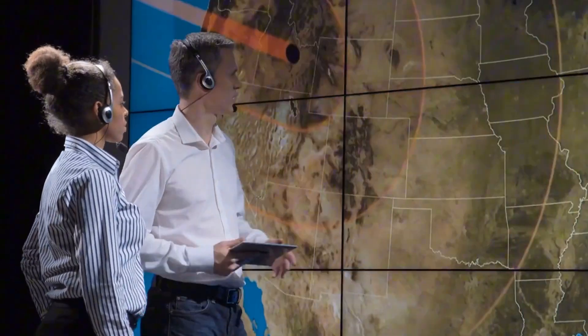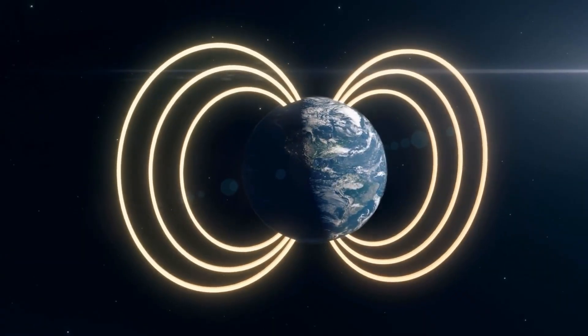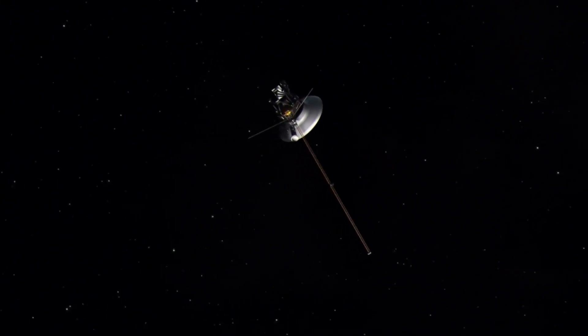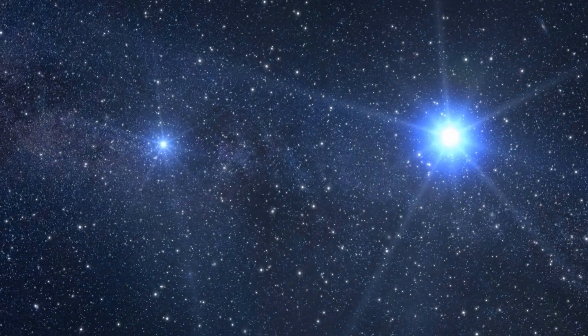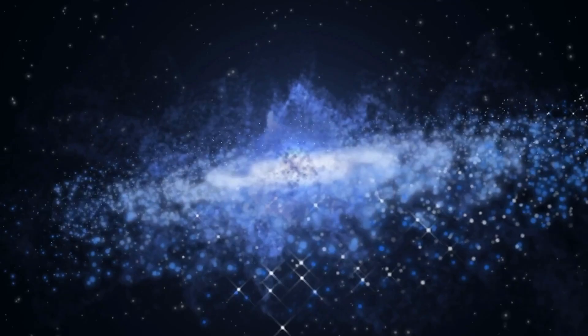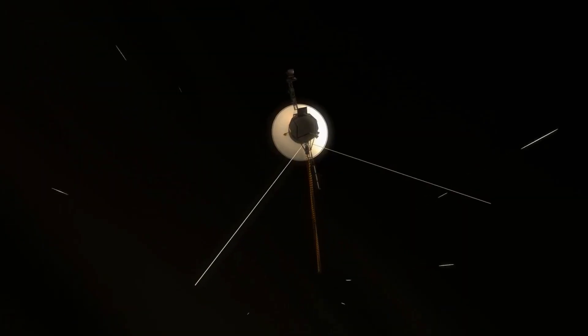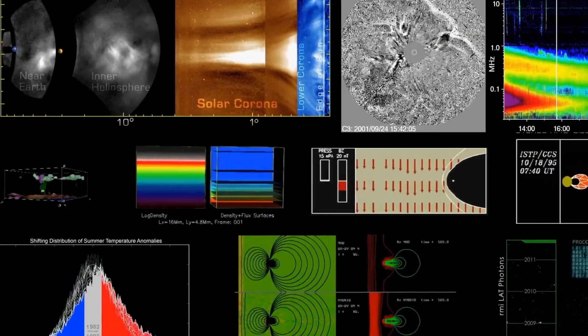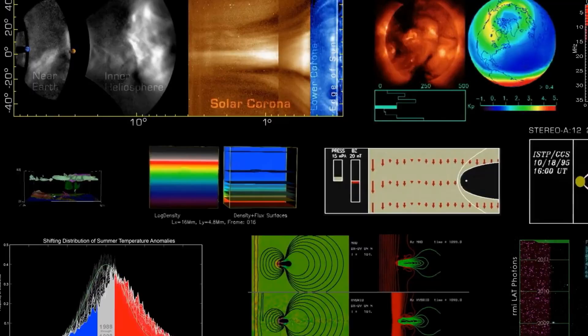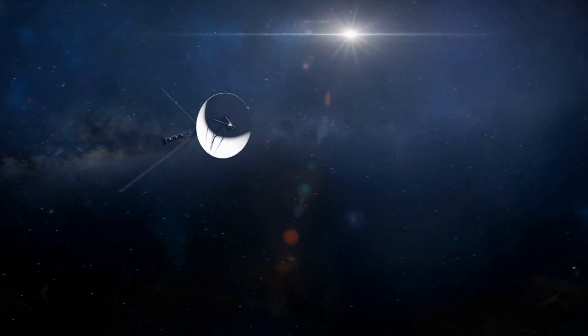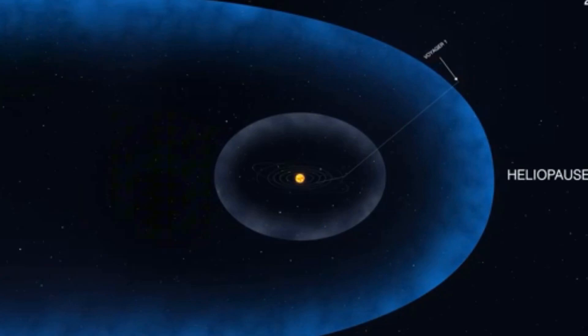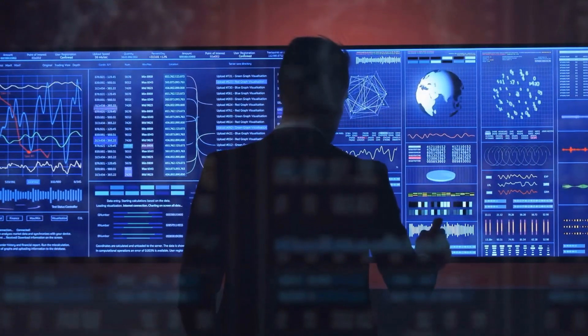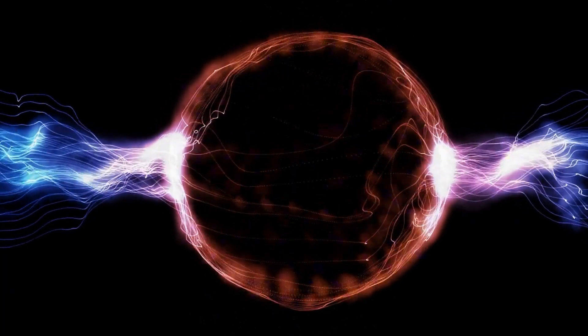The Voyager mission team also closely monitored shifts in the prevailing magnetic field as the spacecraft ventured into the interstellar medium, an environment composed of ionized gases influenced by nearby stars. This interstellar magnetic field was expected to differ in orientation from the heliosphere's. However, the Voyager probes did not detect significant changes in the magnetic field. On August 25, 2012, Voyager 1 finally crossed the heliopause, transmitting compelling data that confirmed the anticipated increase in plasma density, albeit without evidence of magnetic field changes.